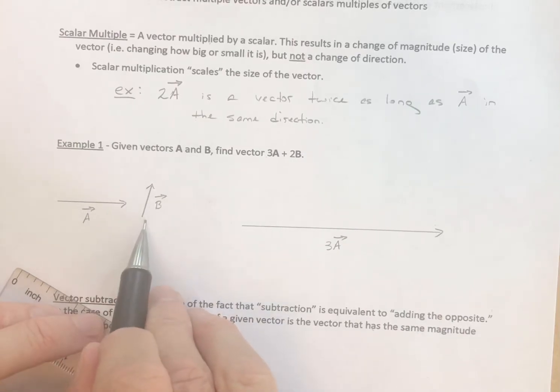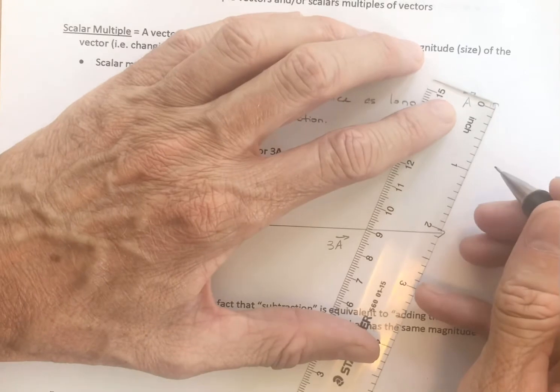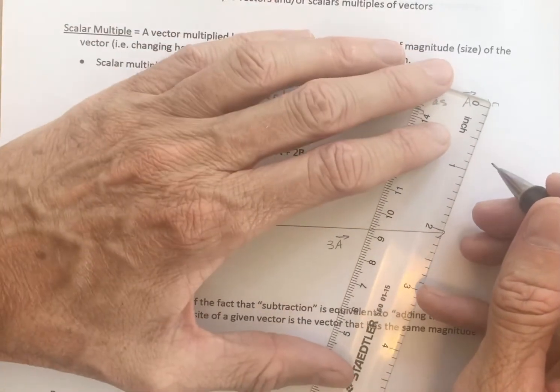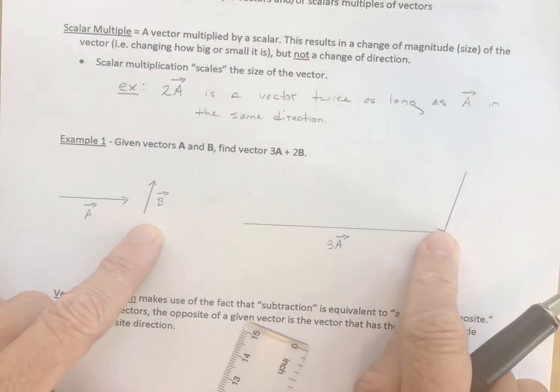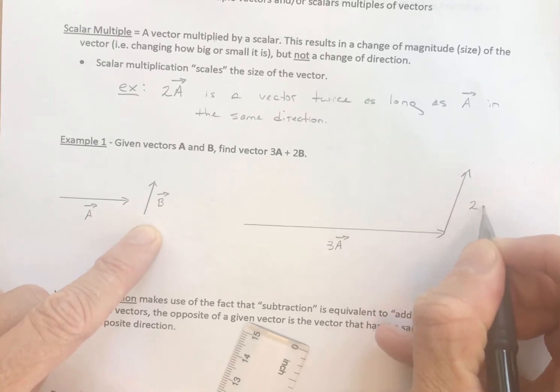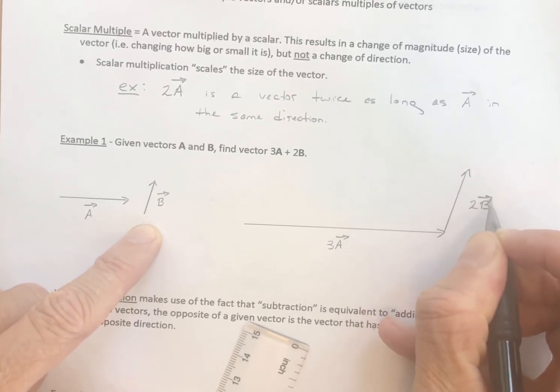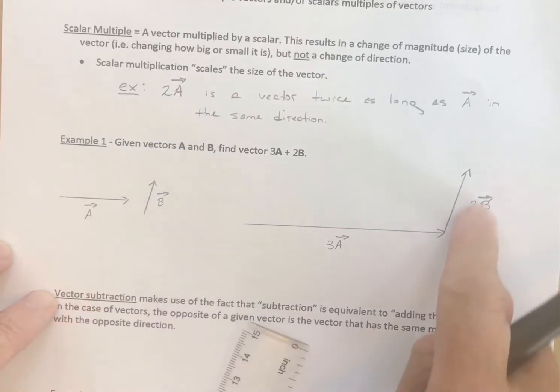All right, 2b. Well 1b is a half inch. So 2b is going to be a full inch. And again, I'm not using a protractor. So I hope I've got it in the general direction. And here's the vector 2b. The vector 2b is twice as long as the vector b in the same direction.